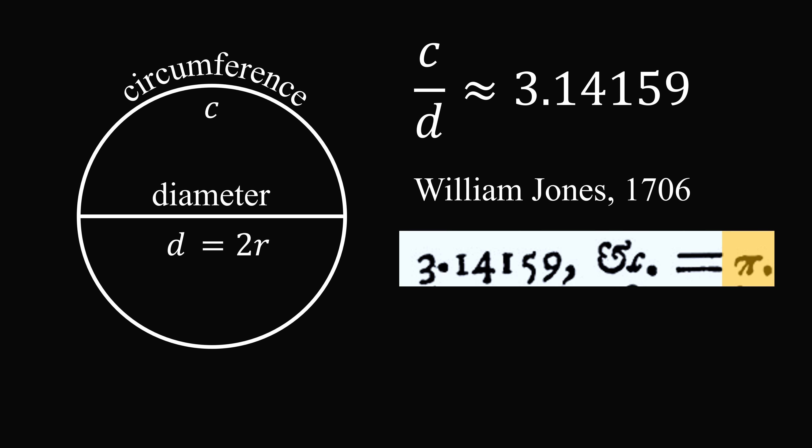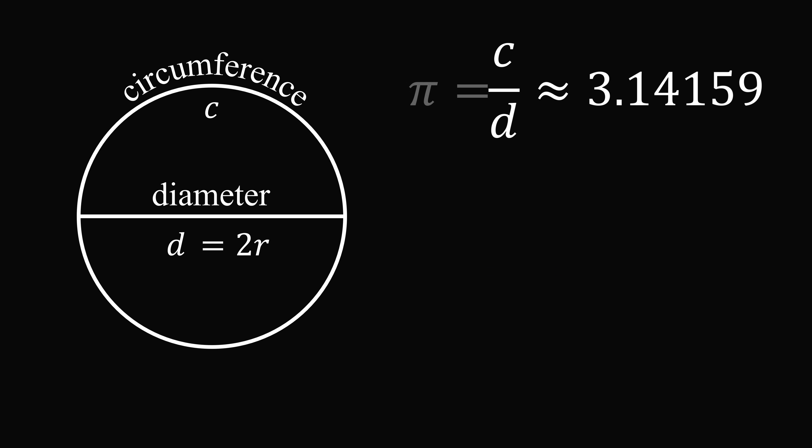In any case, returning to the point, the definition of pi is the ratio of the circumference to the diameter, which is approximately 3.14.